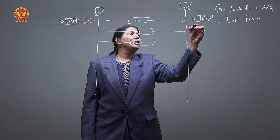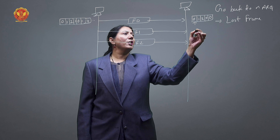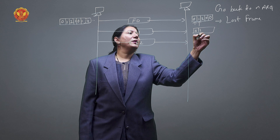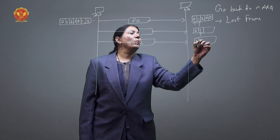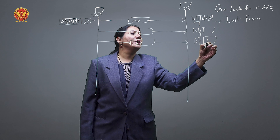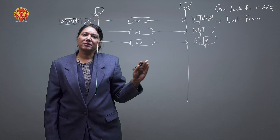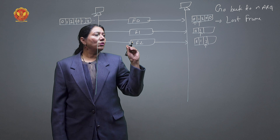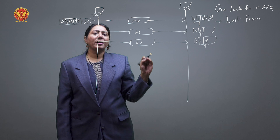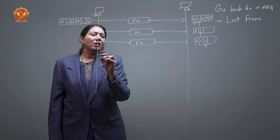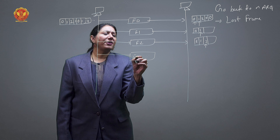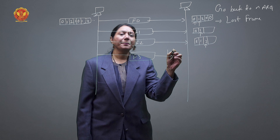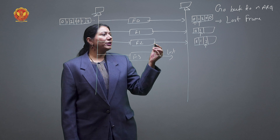The sender will indicate frame 0, then frame 1, and after frame 1 it will indicate frame 2 — this is how the whole flow and sliding of the window goes on. Now once all three frames are transmitted and frame number 3 is also transmitted — let us assume that frame 3 is lost. If it is lost, what is the case?